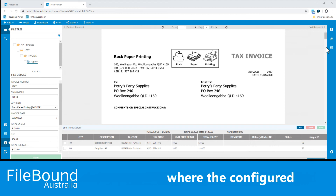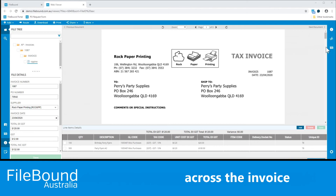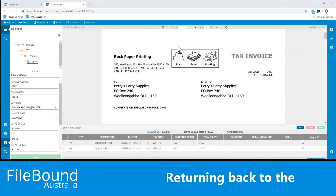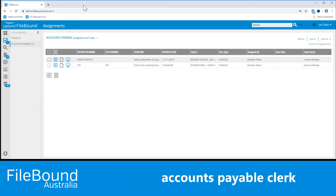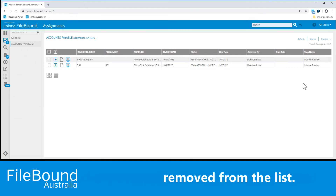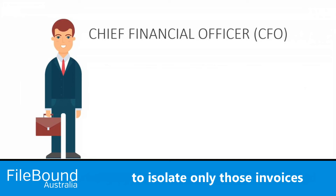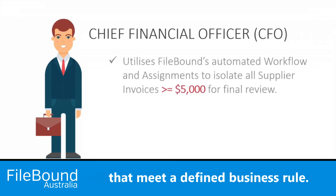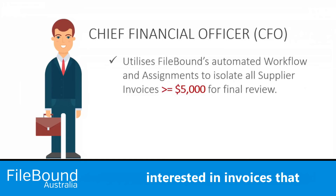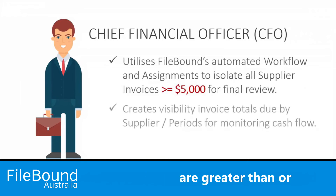It's here in the workflow where the configured business rules are applied. This process validates all data across the invoice, making sure it's complete and, more importantly, that it reconciles. Returning back to the assignments queue for the accounts payable clerk, we can clearly see that the Rock Paper Printing invoice has now been removed from the list. Bringing in the CFO as the last person in our demonstration, he's going to utilise the power of Filebound workflows to isolate only those invoices that meet a defined business rule — meaning he's really only interested in invoices that are greater than or equal to $5,000.